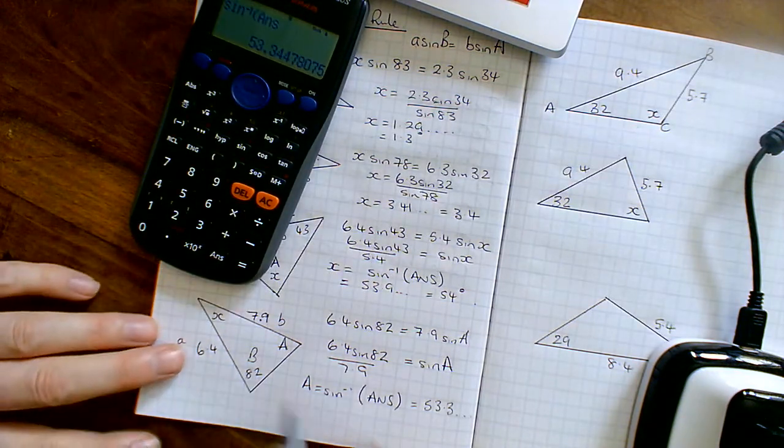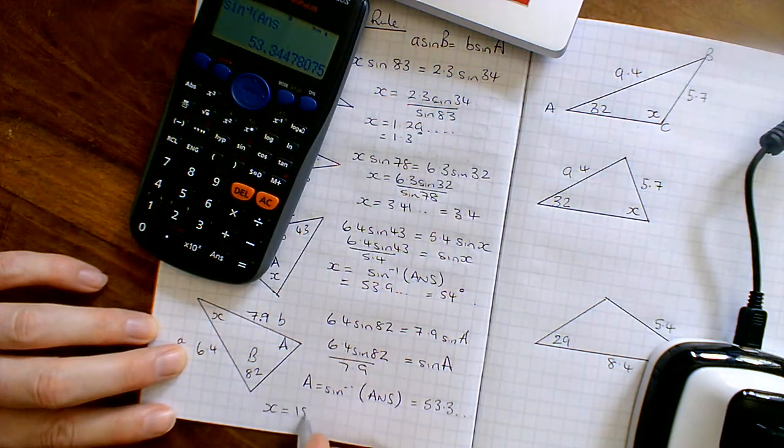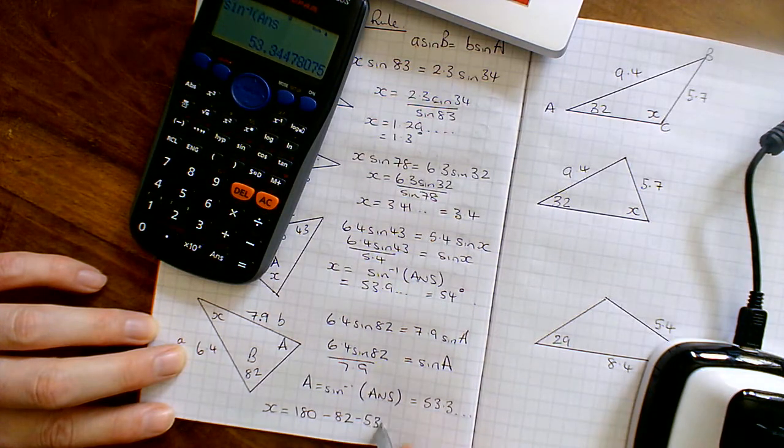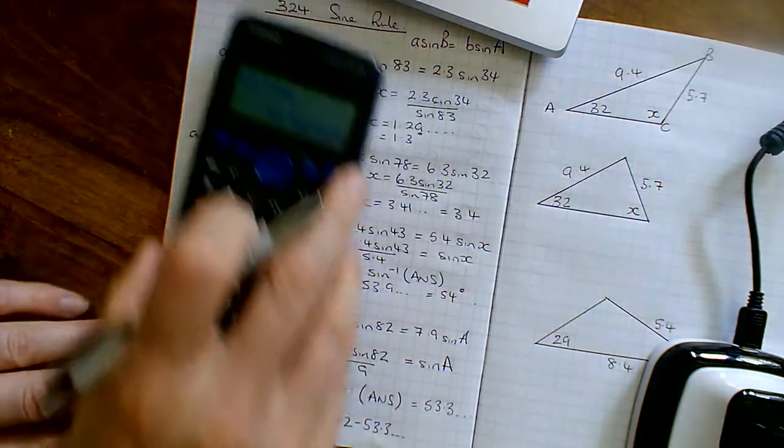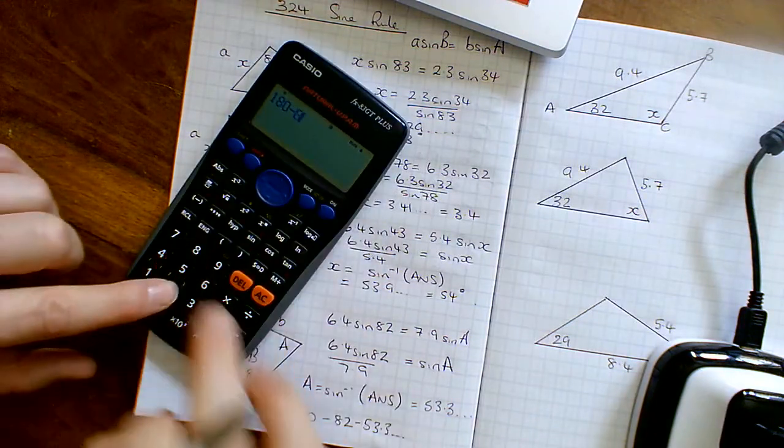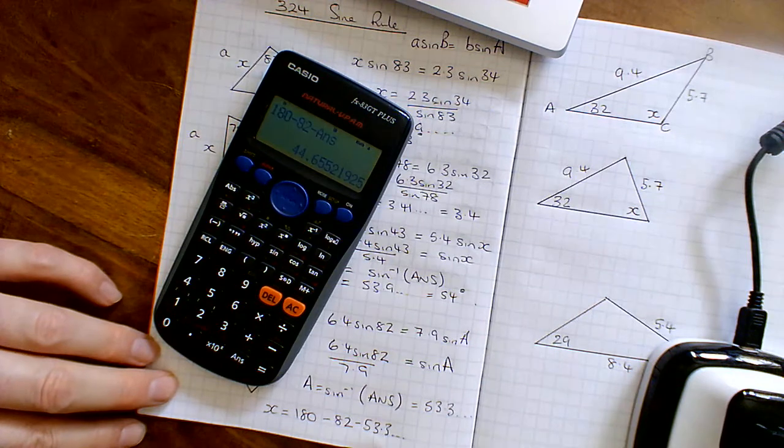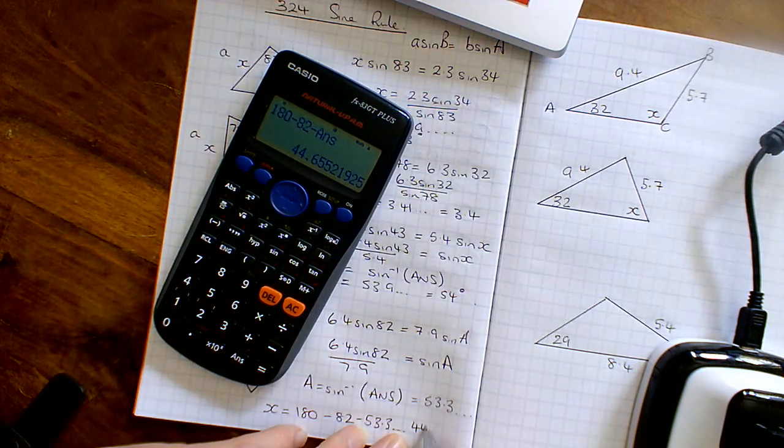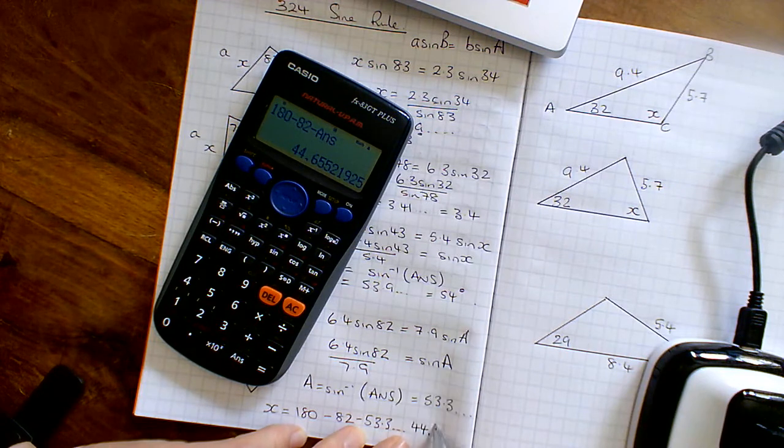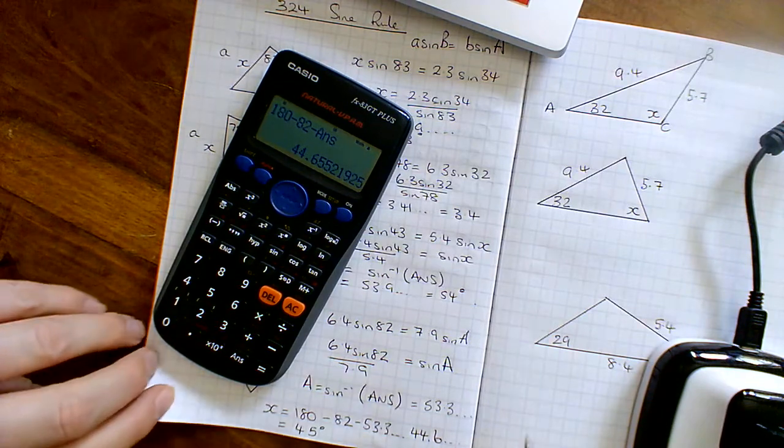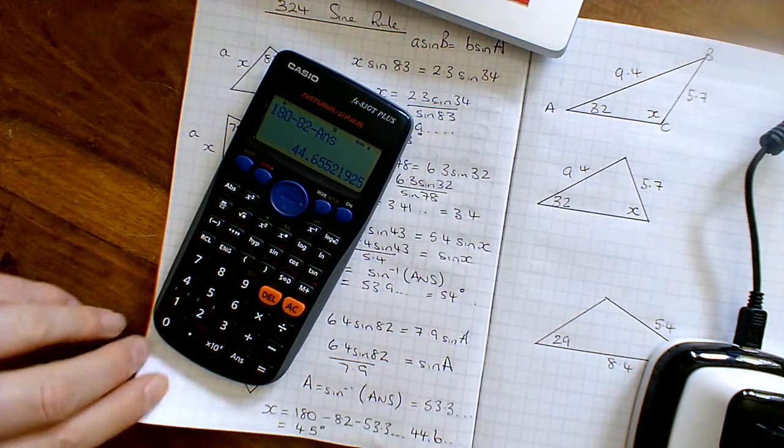So that's A, and therefore X is 180 for the triangle take away 82 take away this 53.3 something or other. So I've got 180 take away 82 take away that answer that I just had, which is 44.6, so 44.6 something, which is equal to 45 degrees to the nearest degree. So I'm always doing the rounding at the very end of the question.